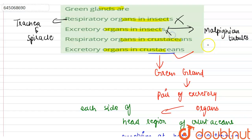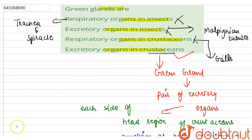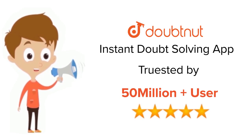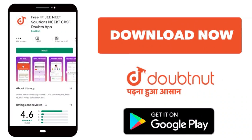The respiratory organs in crustaceans are gills — crustaceans respire through gills — so that option is also incorrect. The correct option here is excretory organs in crustaceans.